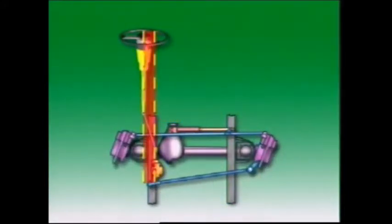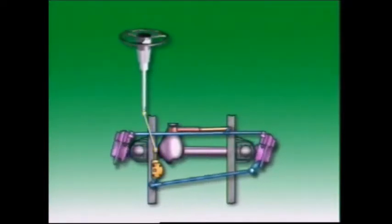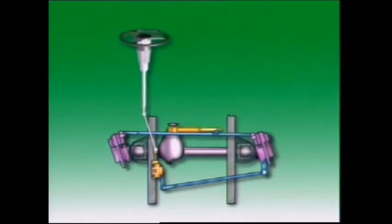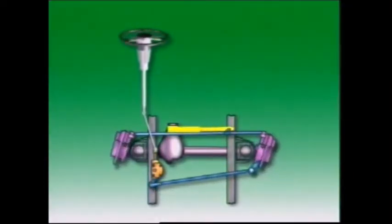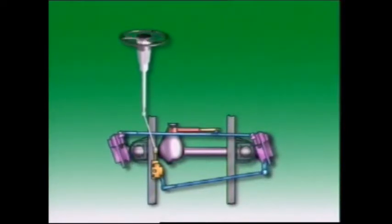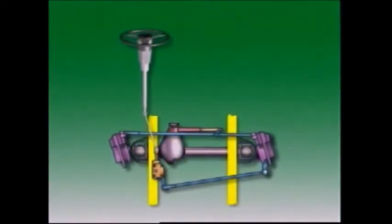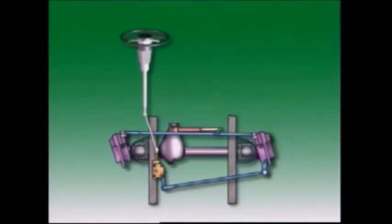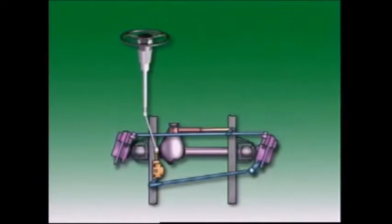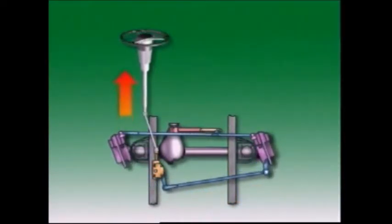The steering box is offset from the steering column, so two universal joints and an intermediate steering shaft are used. Off-road vehicles of this type without power assistance often use a steering damper. It resembles a shock absorber and operates on a similar principle. It is mounted between the track rod and either the rigid axle or the vehicle frame. When the vehicle is driven over rough terrain, its purpose is to prevent shocks being transmitted through the steering linkage and back to the steering wheel.